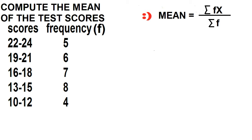To find the total frequency, just add all the frequencies. 5 plus 6 equals 11 plus 7 equals 18 plus 8 equals 26 plus 4 equals 30.